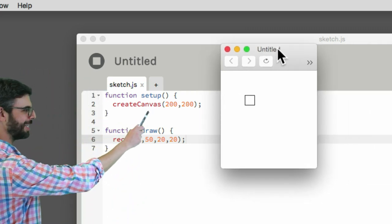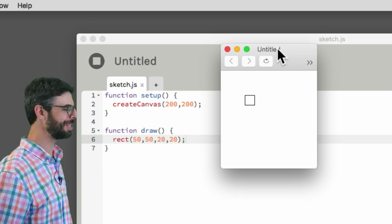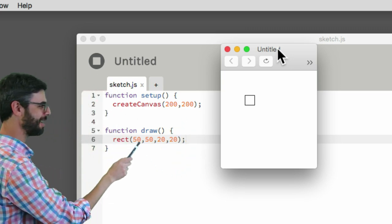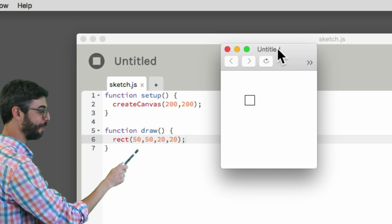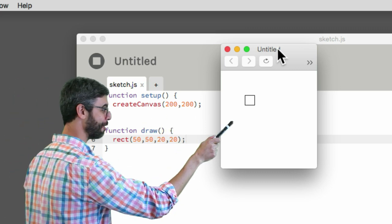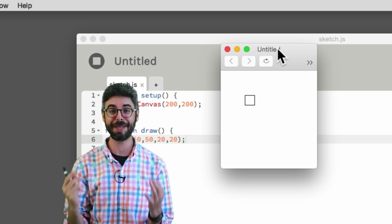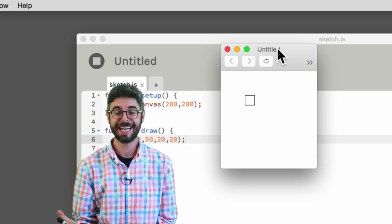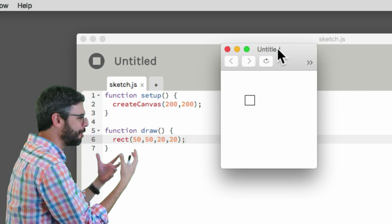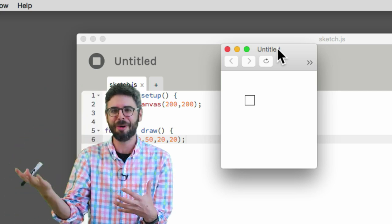I wrote something that says create canvas. And what did that do? It made a canvas. That's the canvas. Then down here I wrote something that said rect, short for rectangle. What did it do? It made a rectangle. So these are the first pieces. These are the first things that I'm going to show you in the next video. How do you, what lines of code do you start to write? And what do those lines of code do?